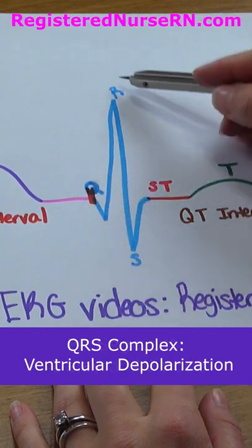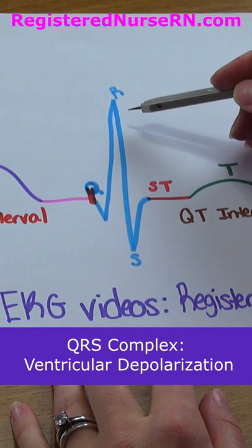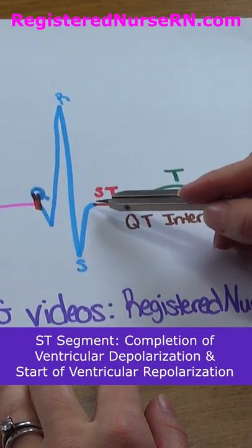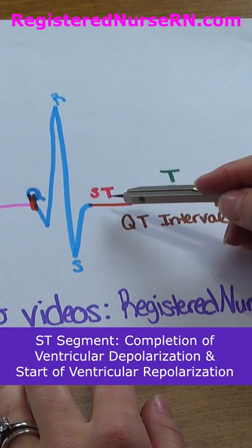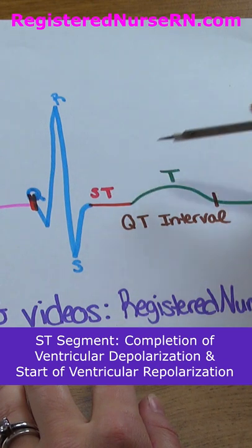Then we have the QRS complex, which represents ventricular depolarization, followed by another flat line called the ST segment. This represents the completion of ventricular depolarization and the beginning of ventricular repolarization.